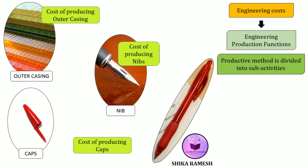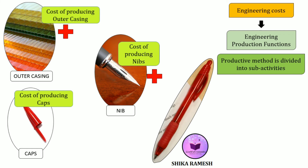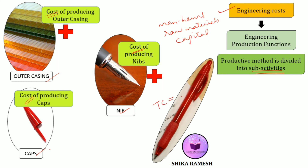By adding up the cost of producing the outer casings, the cost of producing the nibs, and the cost of producing the caps and refills, we get the total cost of producing the pens. This is what is called engineering cost. In economics, total cost considers man hours devoted, raw materials used and capital employed. But in engineering cost, the production method is divided into sub-activities — for a pen, different components like outer casing, nibs and caps are produced separately, each incurring its own cost, and summing these gives the final engineering cost.